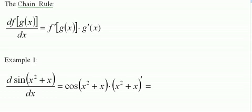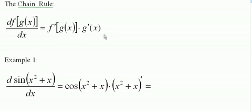The chain rule. Here's the chain rule. If you have a function inside a function, like g inside of f, then you take the derivative of f and keep g inside it, so we have f prime of g of x, times the derivative of g of x.